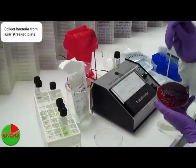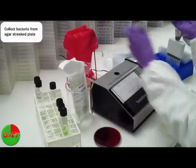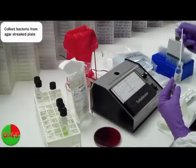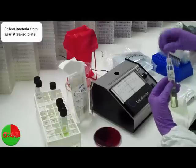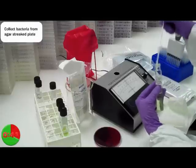Collect your sample by holding the inoculator swab vertically and touch the end to pick up bacteria from the auger streaked plate. The swab will automatically collect the amount of cells needed for the test.